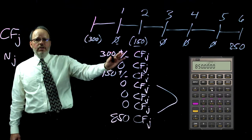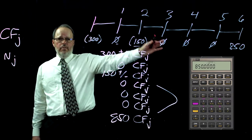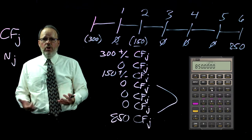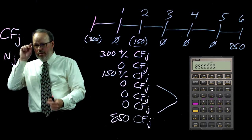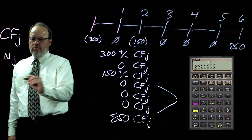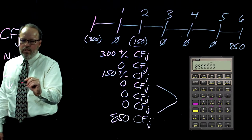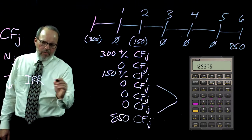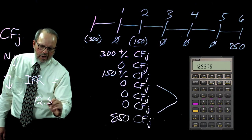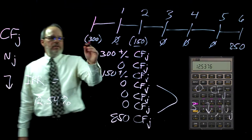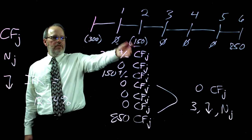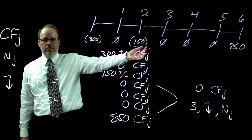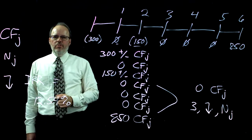Now that we've entered everything using our timeline, we want to know what return we've achieved — what's called an internal rate of return. Hit the downshift key and then the internal rate of return key, and you should come up with 12.54%. So based on spending $300 for the chair, spending $150 to repair it at the end of year two, and receiving $850 after six years, this is your internal rate of return.